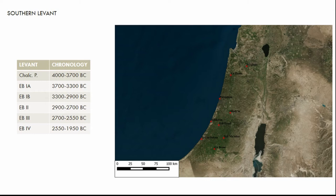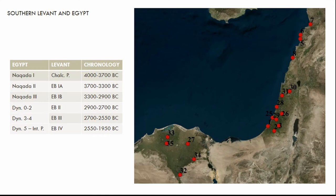Nowadays it is generally accepted that the causes of such processes have to be found mainly inside the society under study. Nevertheless, it is interesting to look also at the several impulses this society received from neighboring regions. This is the subject of several studies that have taken into consideration different regions and periods.